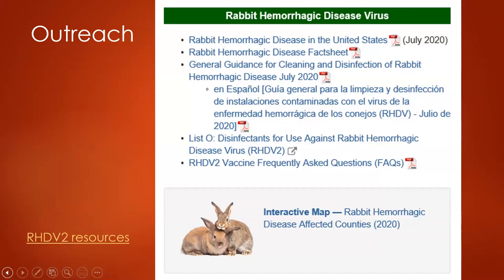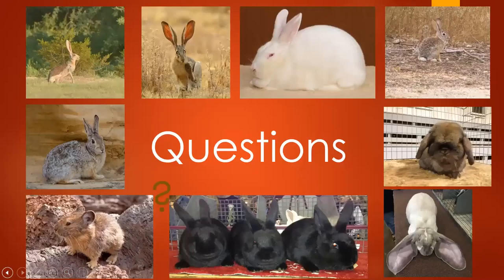For outreach and resources, visit the USDA APHIS website and simply type in 'rabbit hemorrhagic disease virus.' Everything shown in this presentation will come up there if you would like to do more in-depth research. If you have any questions, you can contact me, Corrie Lucero. My phone number is 505-435-1644 and my email is clucero@nafws.org. Thank you. Take care.